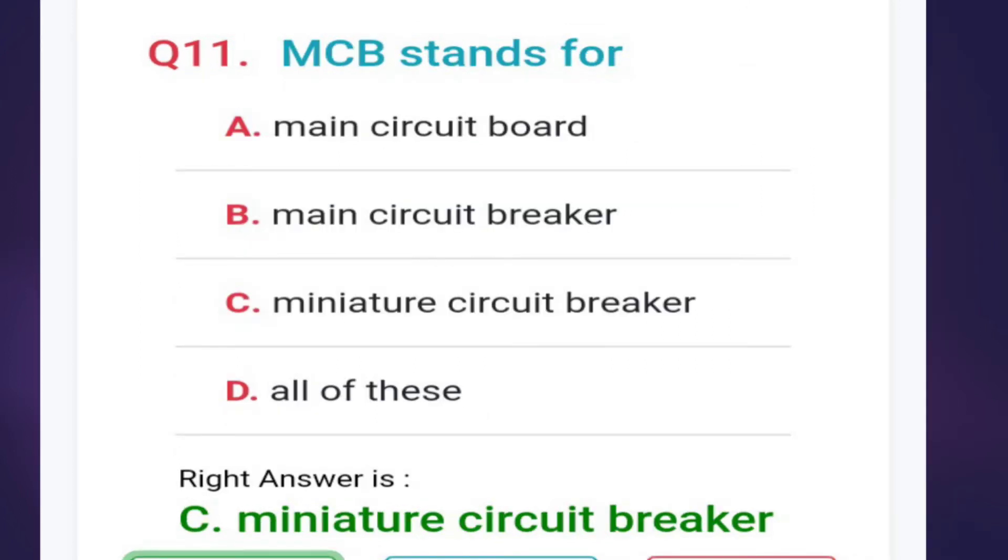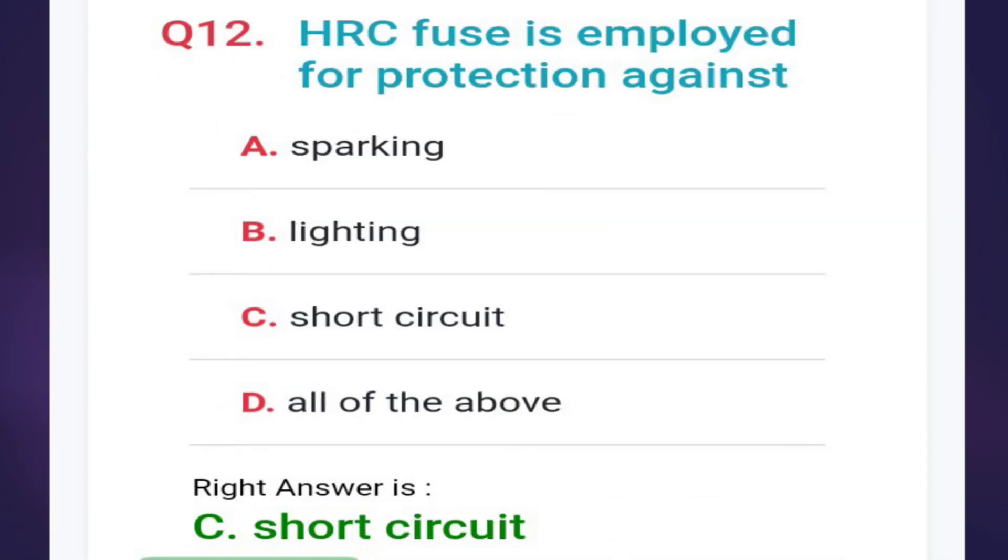Eleventh: MCP stands for miniature circuit breaker. Twelfth: HRC fuse is employed for protection against sparking, lightning, short circuit, or all of the above. The correct answer is option C, short circuit.